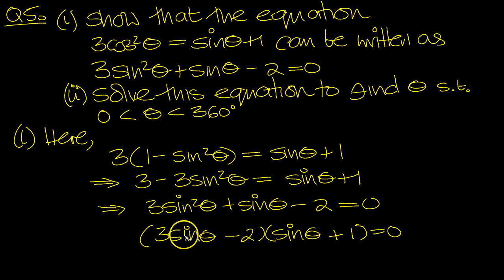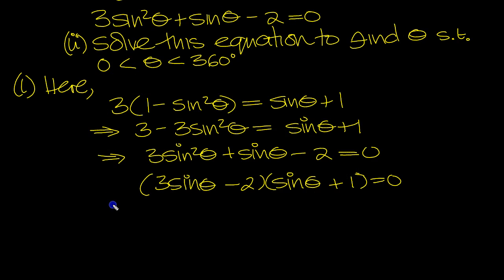Let's just check that: 3sin²θ, there's our 3sinθ, the bigger. Take away 2sinθ, the smaller, which gives sinθ. Minus times plus is minus 2, times 1 is 2. So that tells us sinθ = 2/3 or sinθ = -1.